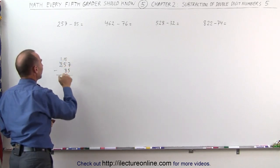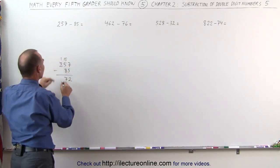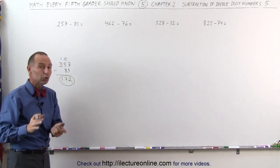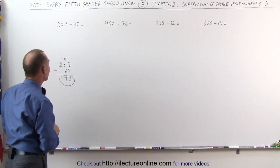15 minus 8 is 7, and then the remaining 1 minus 0 is 1, and the answer is 172. That's how we would normally do this, writing it on a piece of paper.